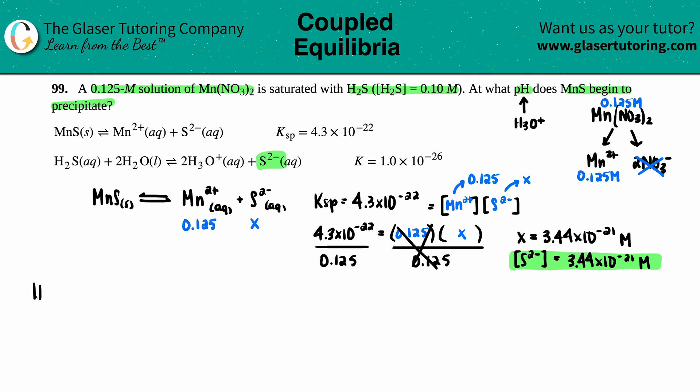So if I just write that one down, H₂S (which is aqueous) plus 2H₂O (that's liquid), this comes to equilibrium with 2H₃O⁺ aqueous, plus S²⁻ aqueous.